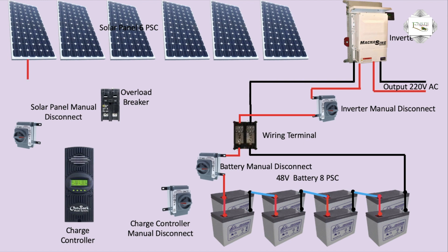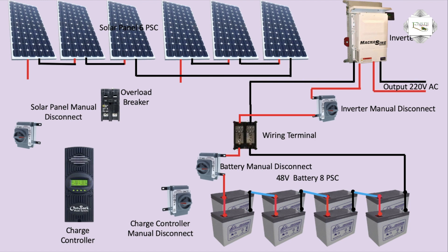The solar panel outgoing positive and negative connections follow a series connection theory: positive to negative, negative to positive, and so on. Solar panel series connection theory and parallel connection theory are both applied. Positive and negative connections alternate for series, and all panels connect in parallel as well.